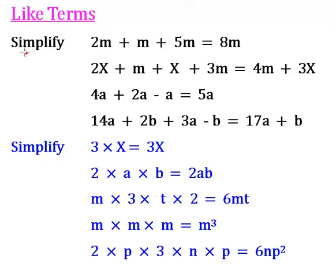Like terms. We're asked in these examples to simplify the following. We have in the first one 2m plus m, which could be 1m, plus 5m. When we add these together we will get 8m.